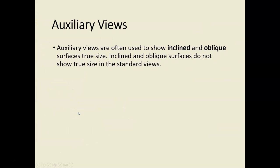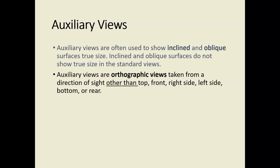Auxiliary views are used to show inclined and oblique surfaces in their true shape and size. Inclined and oblique surfaces are surfaces that will not appear true shape and size in a standard view — that is, a top, front, right side, left side, bottom, or back view. That's the reason why we need an auxiliary view: to show those surfaces clearly and allow us to dimension them without confusion. Auxiliary views are still orthographic views, so they must conform to the alignment rules for orthographic views.